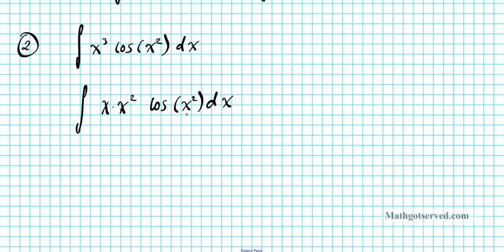If we call x squared as our substitution variable and differentiate it, we get x dx as part of du. I'm going to call it k-substitution instead of u-substitution, because we'll be using u later for integration by parts. Using k-substitution: let k equal x squared.